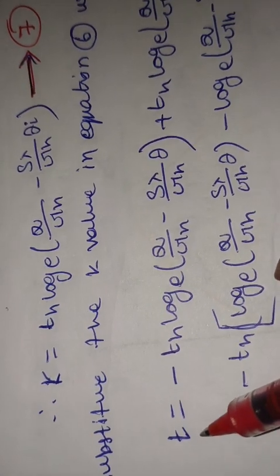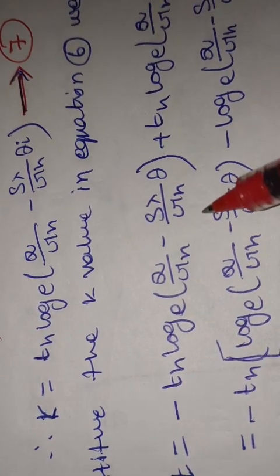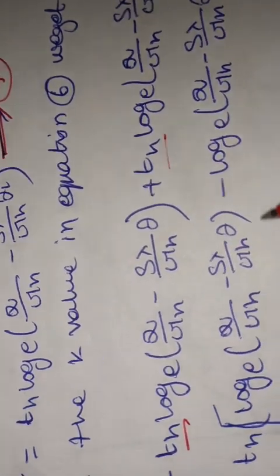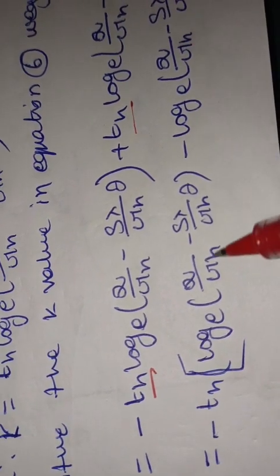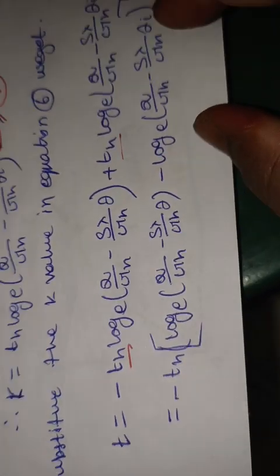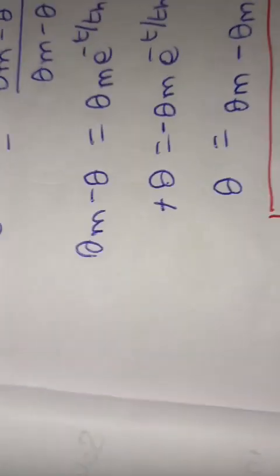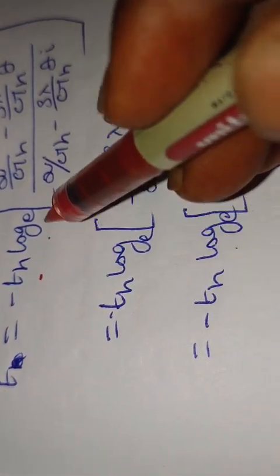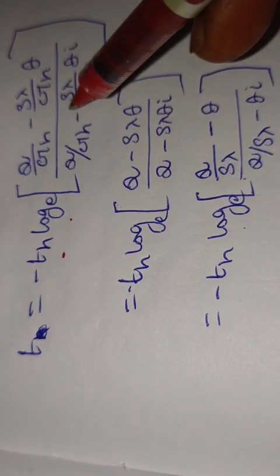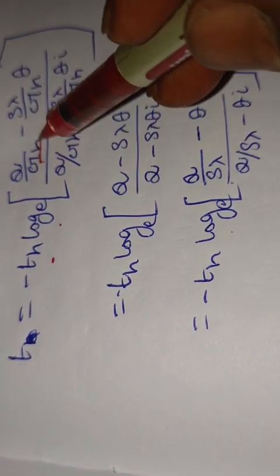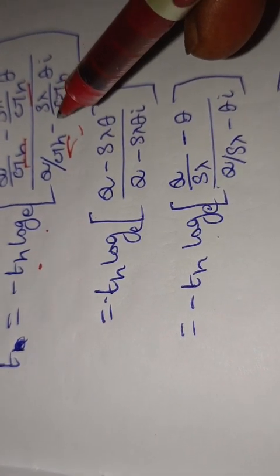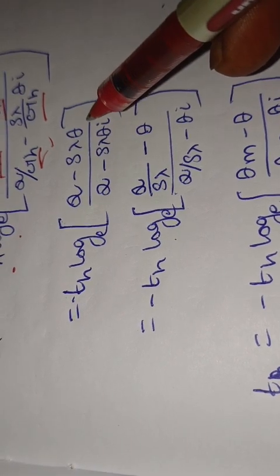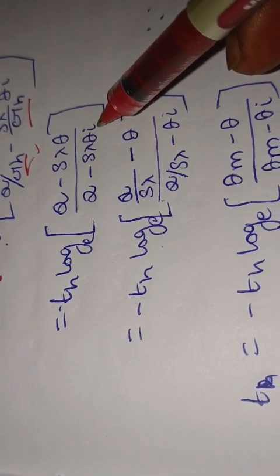Substituting the obtained k value back into the previous expression and taking T_H as the common term outside, the logarithmic subtraction formula is applied. Using the log subtraction rule and simplifying, the expression becomes: t = −T_H · ln[(Q − S·λ·θ) / (Q − S·λ·theta_i)]. This is equation eight.